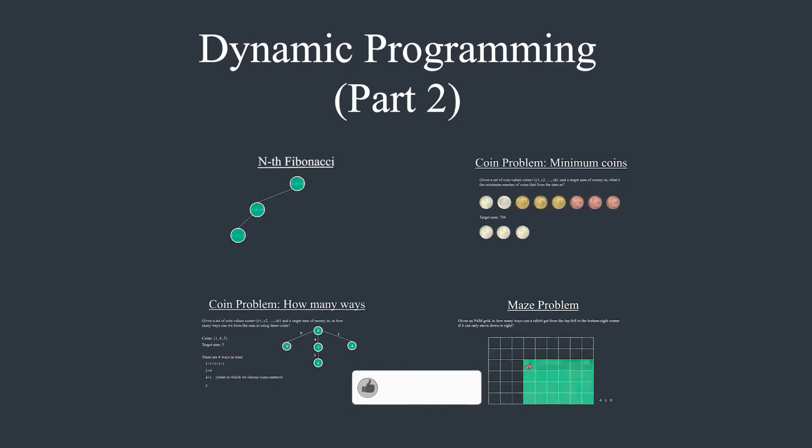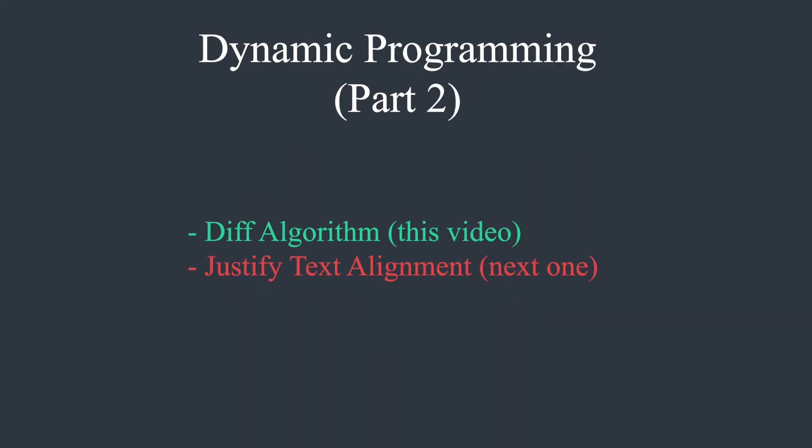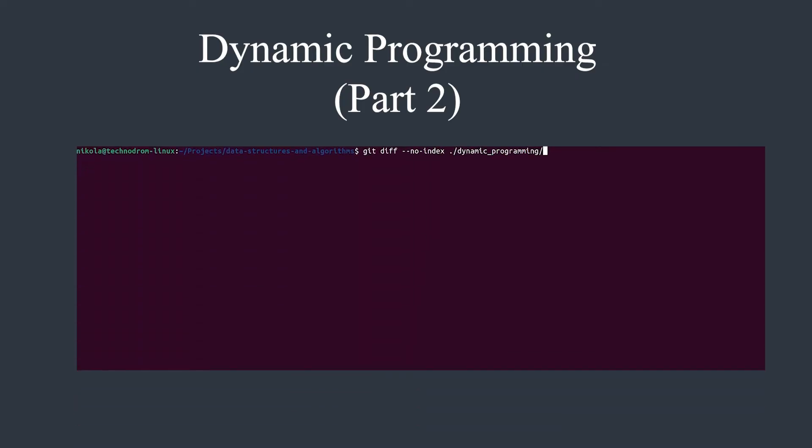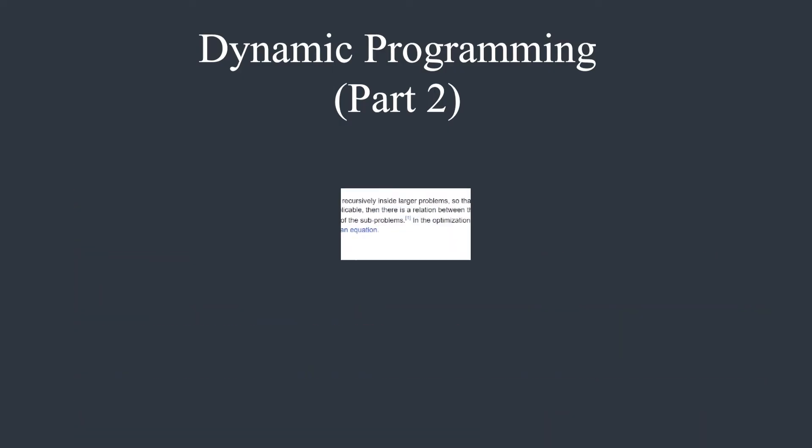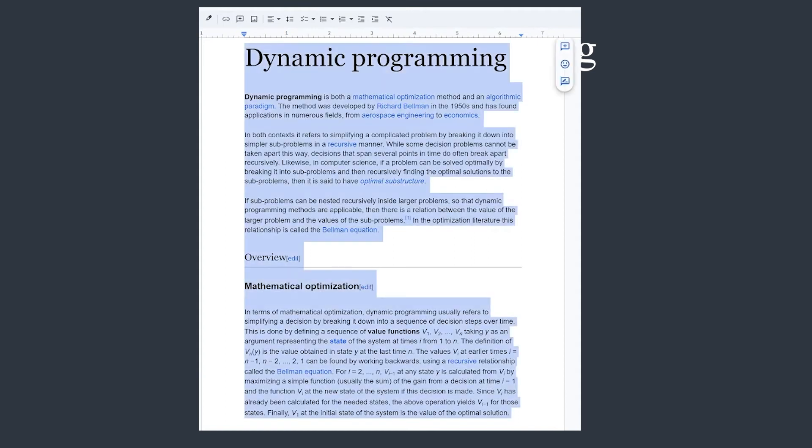I often get comments that dynamic programming is only for interviews and has no practical value. This is why I decided to look at two real-life problems that all of you use on a daily basis. First one is the Git diffing algorithm, which uses a variation of the longest common subsequence. And the second one is justify text alignment using Google Docs or Microsoft Word.